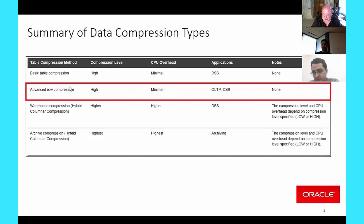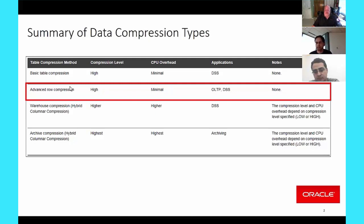What's a typical compression ratio for basic and advanced compression? We typically see about two to four times compression ratios. As a side note, customers who use hybrid columnar compression usually see a range of about six to fifteen times. Two to four times is pretty typical for our customers. We have a free tool called Compression Advisor—DBMS_COMPRESSION—that you can run for free, pointing it to any table or partition, and it'll give you a fairly accurate estimated compression ratio.